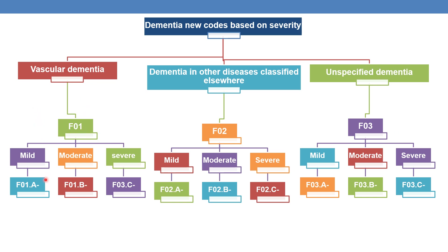Vascular dementia of mild severity is given by subcategory F01.A. Moderate vascular dementia is given by subcategory F01.B. Severe vascular dementia is given by subcategory F01.C. Similarly, mild dementia in other diseases classified elsewhere is given by subcategory F02.A, moderate by F02.B, and severe by F02.C — all codes are further expandable.